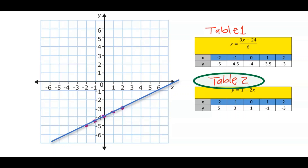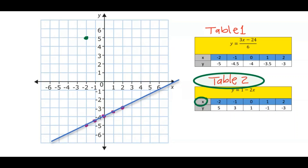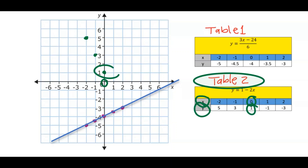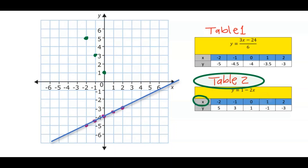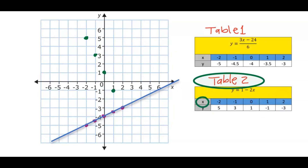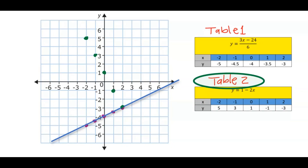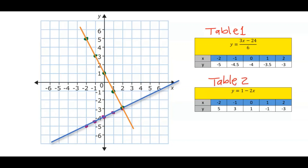Still on the same graph, let's plot table 2 for equation 2. When x is minus 2, y is 5. When x is minus 1, y is 3. When x is 0, y is 1. When x is 1, y is minus 1. When x is 2, y is minus 3 — here we have a superimposition point, which is a coincidence. With a long ruler, join all the points. This is the straight line graph for table 2 from equation 2.